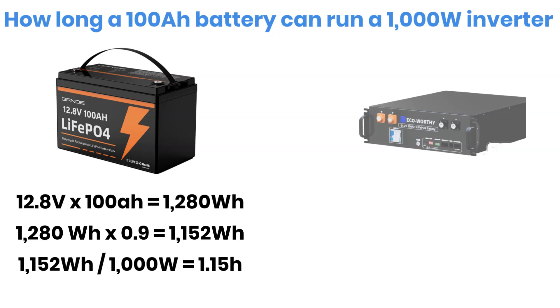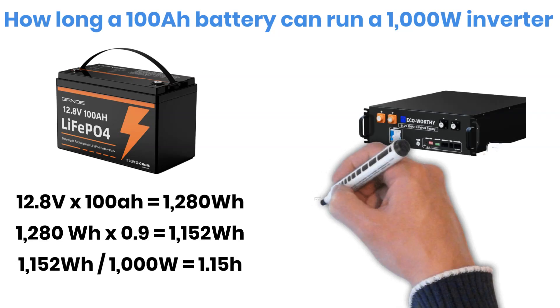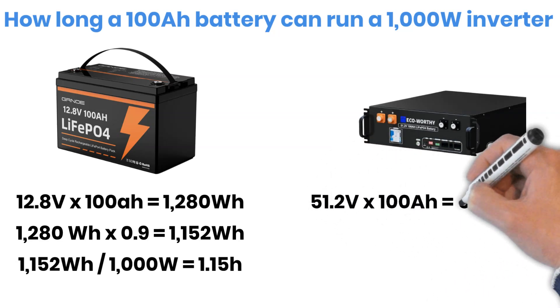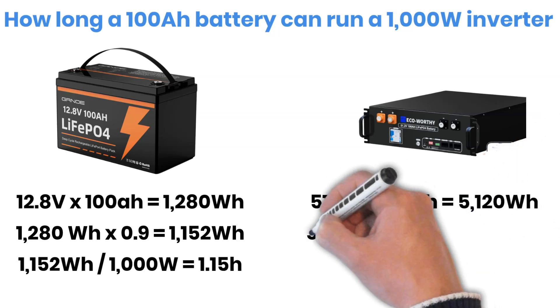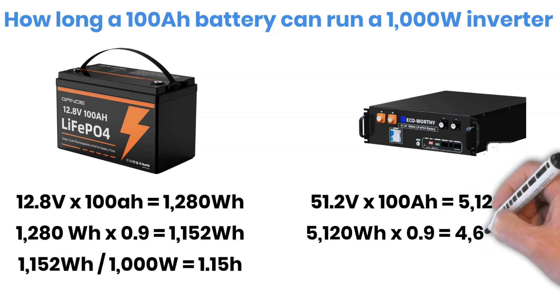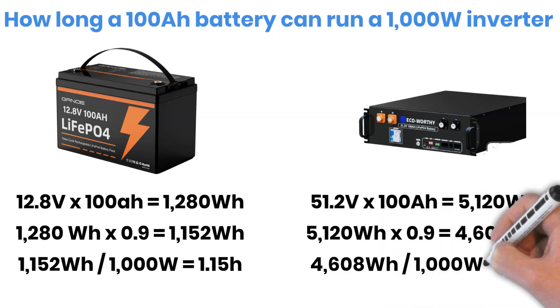For a 48 volt, 100 amp hour server battery, total energy is about 5,120 watt hours. After efficiency losses, you'll have roughly 4,608 watt hours available. So with a 1,000 watt load, it can run for around 4.6 hours or about 4 hours and 36 minutes.